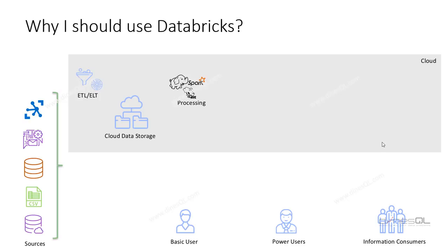We'll have our ETL or ELT solutions for getting data from sources and pushing it to the destination. We need a compute environment specifically for data that cannot be processed using a standard relational database management system — we call these unstructured datasets. For those, you have to use platforms like Hadoop, or within Hadoop you can use Spark, Hive, and similar tools. Even though we talk about modern data warehousing, we still implement the structured data warehouse — this is where you see star schema or Snowflake schema following Kimball's concept.